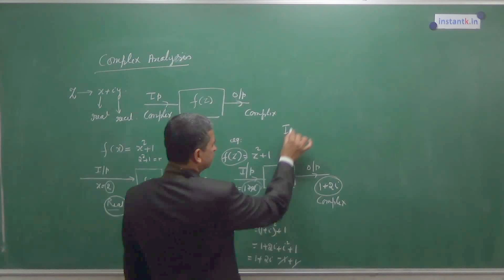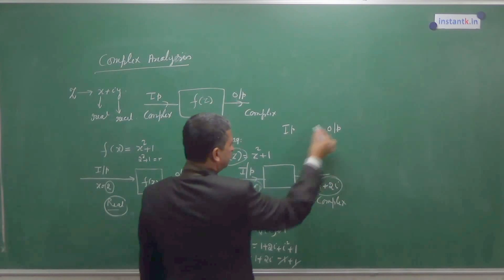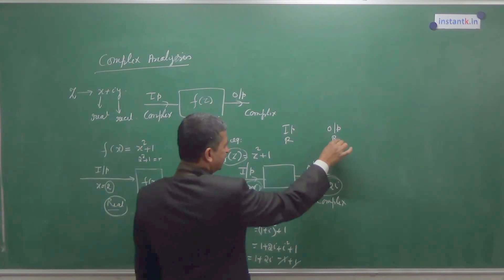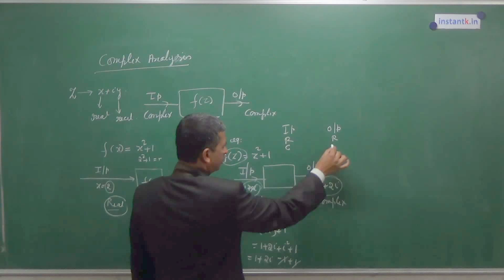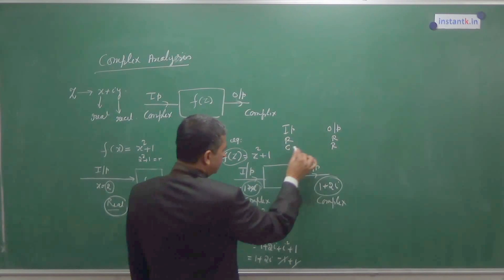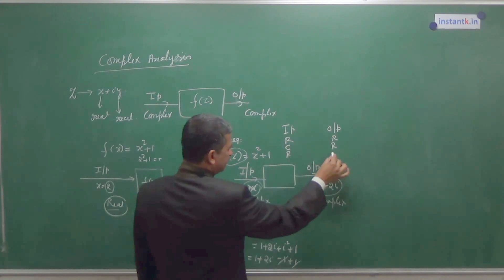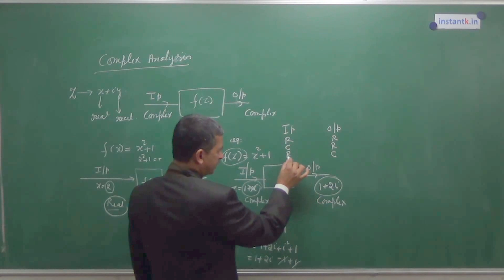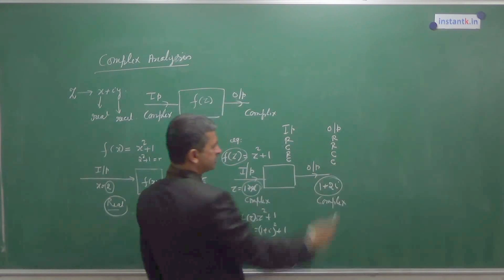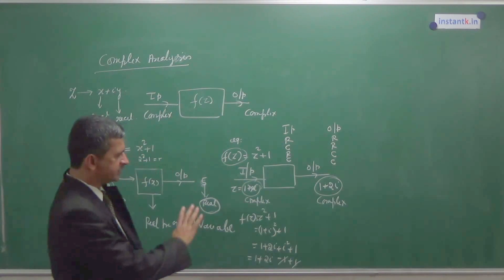One input, output. Input is real, output may be real. Input may be complex, output may be real. Or here, again real, you will get a complex output. For complex, you may get complex output. All these four categories are covered here.